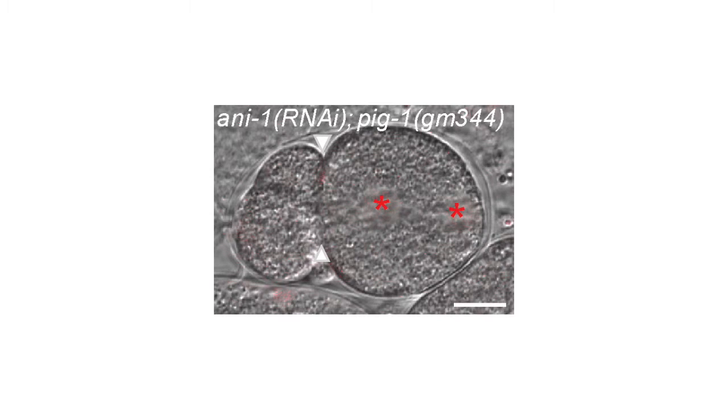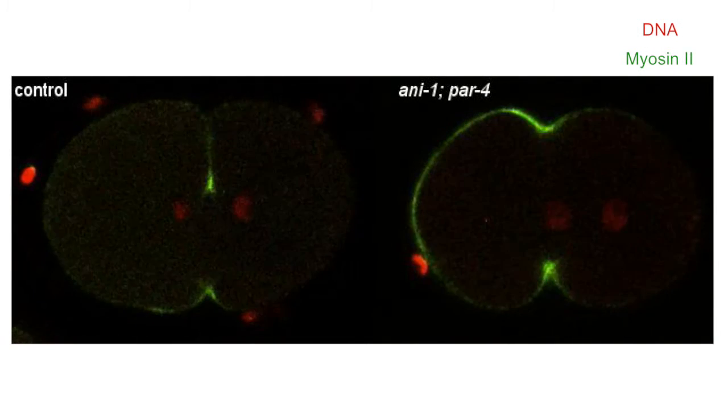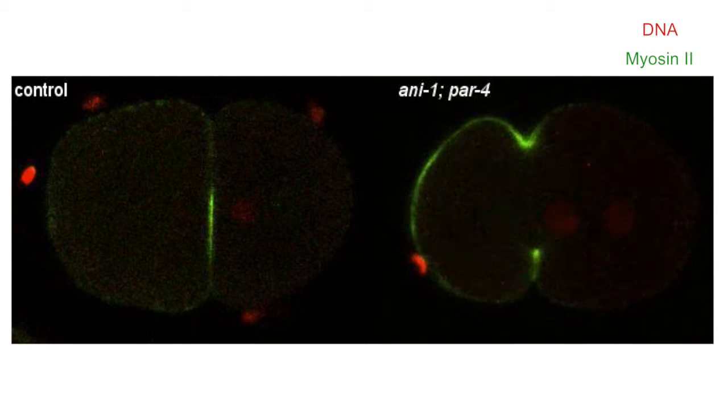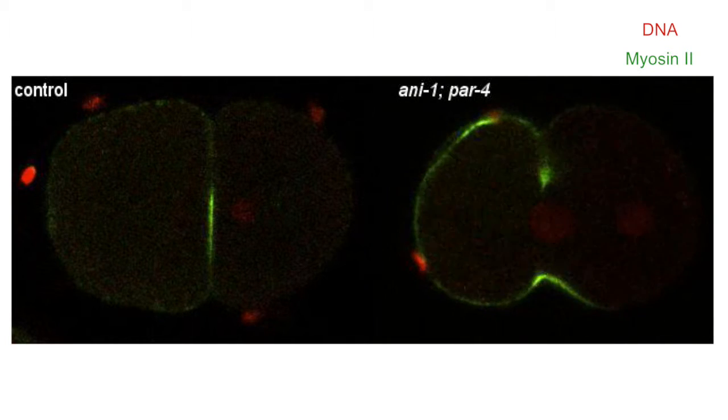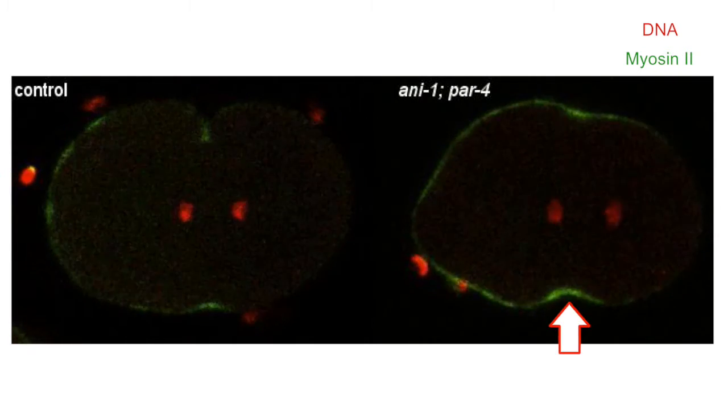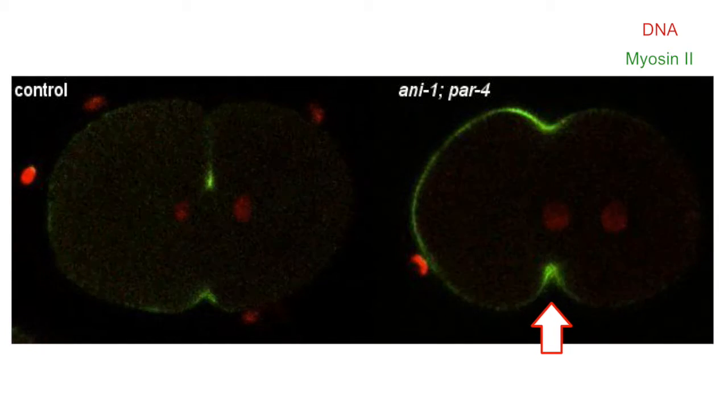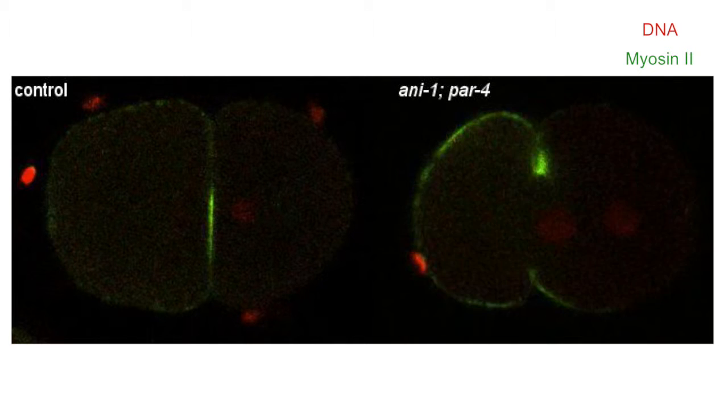To understand more about these furrow position defects Pakle et al visualized furrow ingression using GFP tagged myosin 2. If you remove anilin 1 and PAR4 or anilin 1 and PIG1 the furrow starts to ingress carefully at the right position close to the central spindle consistent with our other data showing that the signaling from the mitotic spindle is fine but then the furrow moves towards the anterior.